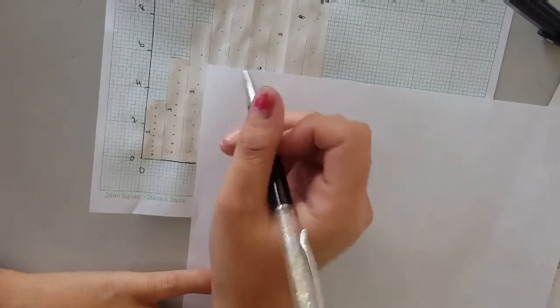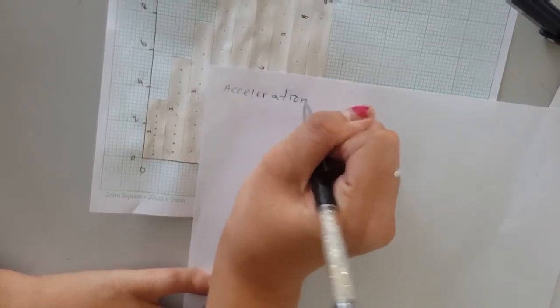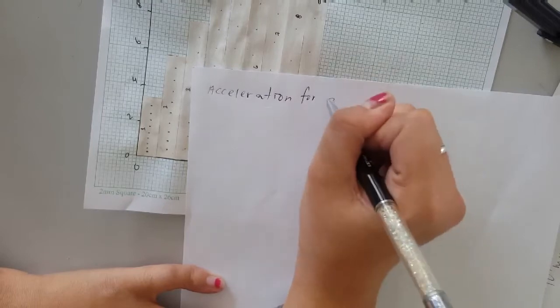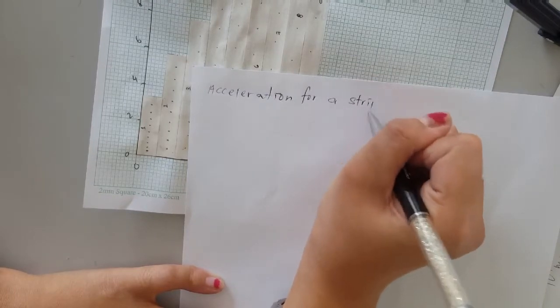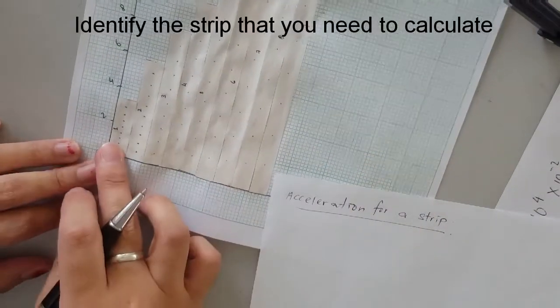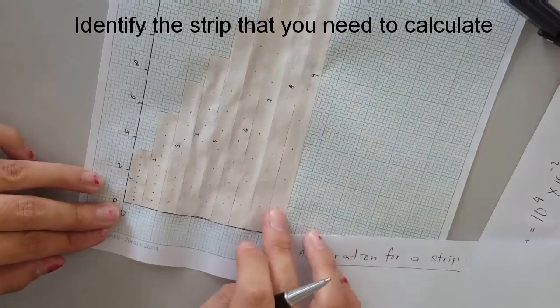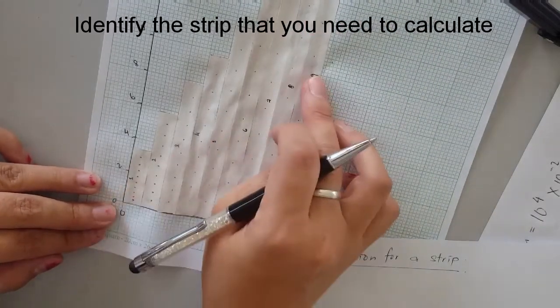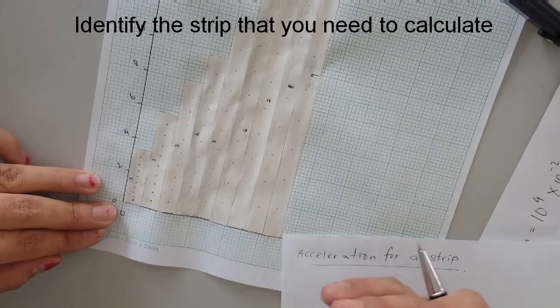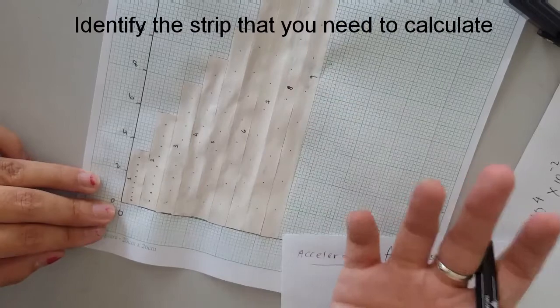Hi everyone, this video is to find the acceleration for a strip. From the previous videos I already did this particular ticker timer strip, and I have this chart with nine strips numbered one to nine. I want to do calculations, so I'm going to take strip number nine because it's longer and easier for me to read.